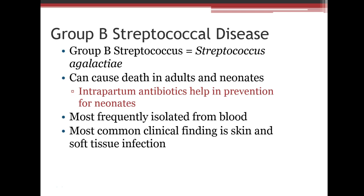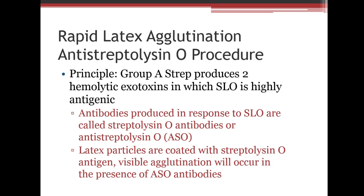Group B strep is the type that mothers can potentially pass to babies during childbirth. Mothers are tested, and if positive, they are treated during labor and delivery to prevent transmission. This can cause meningitis and other infections in the baby. Testing uses rapid latex agglutination for antistreptolysin O.